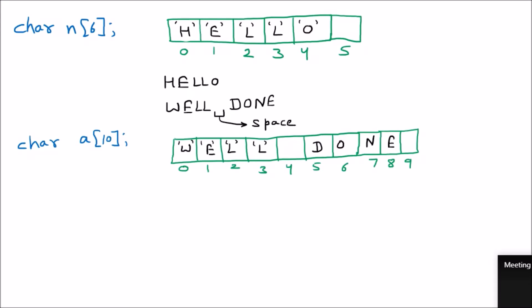Everything will be in single quotes — that is the representation of a character. The space is represented by empty single quotes with nothing inside. If I talk about a character, it always comes in single quotes. If I talk about a string — the whole string — then it comes in double quotes. We are learning the very important concept of the character array.